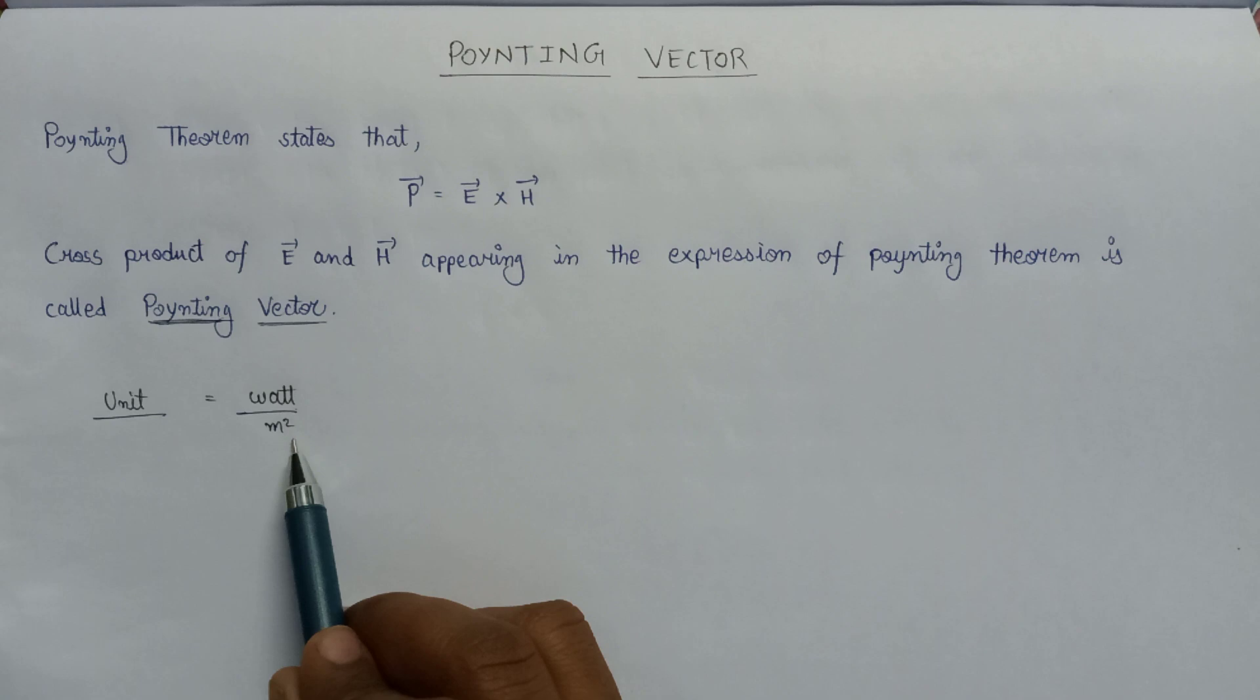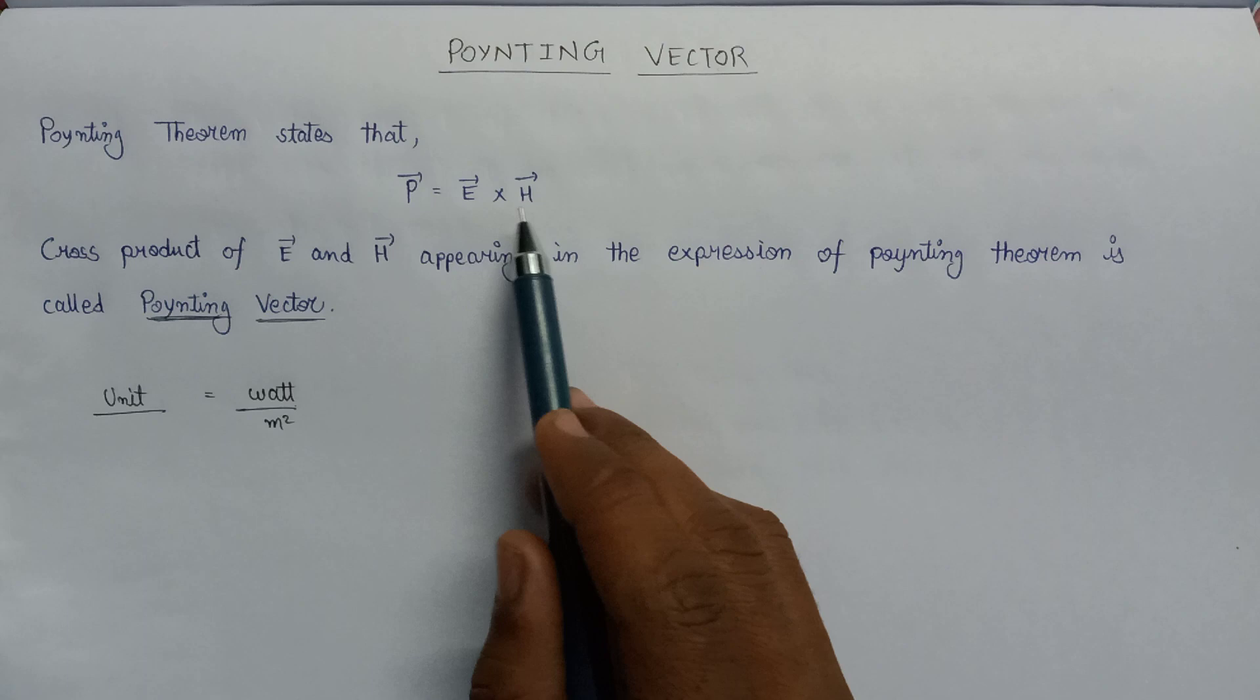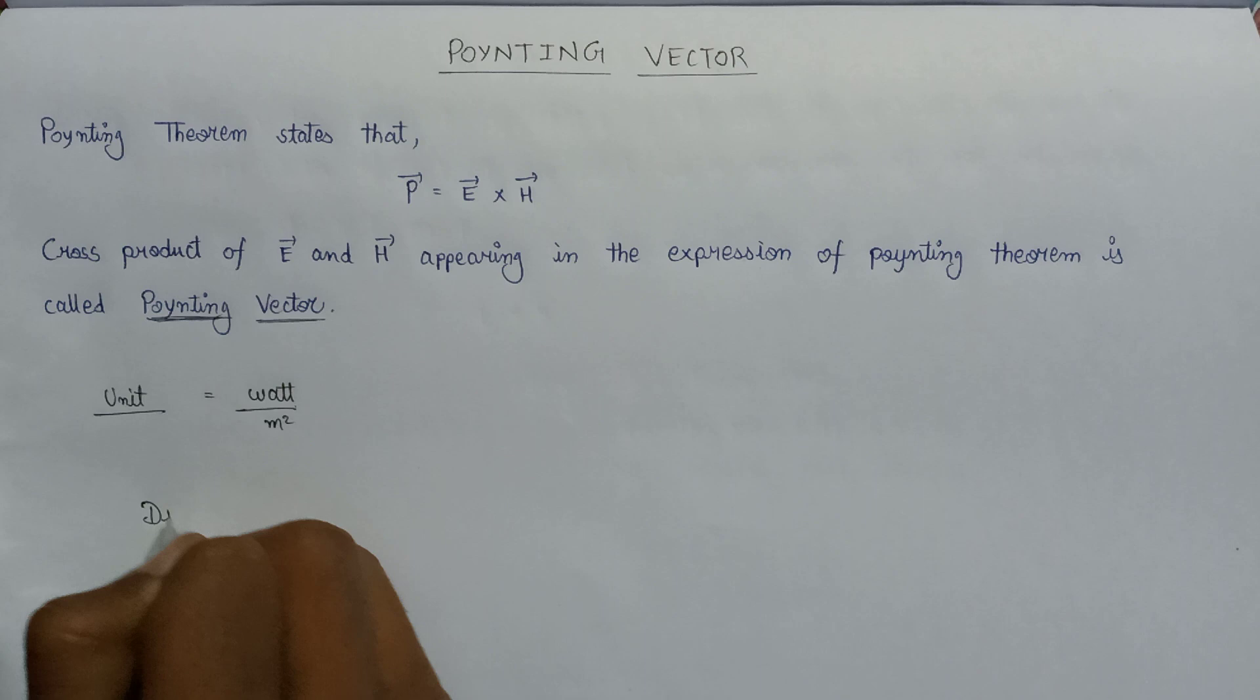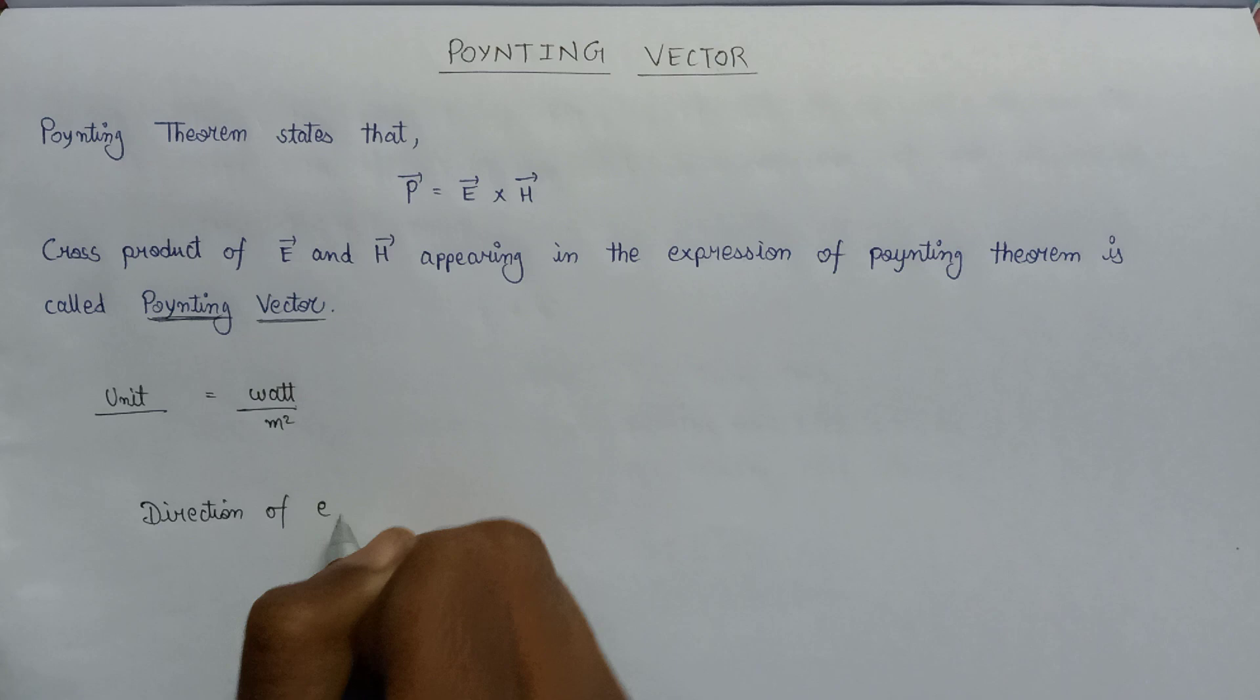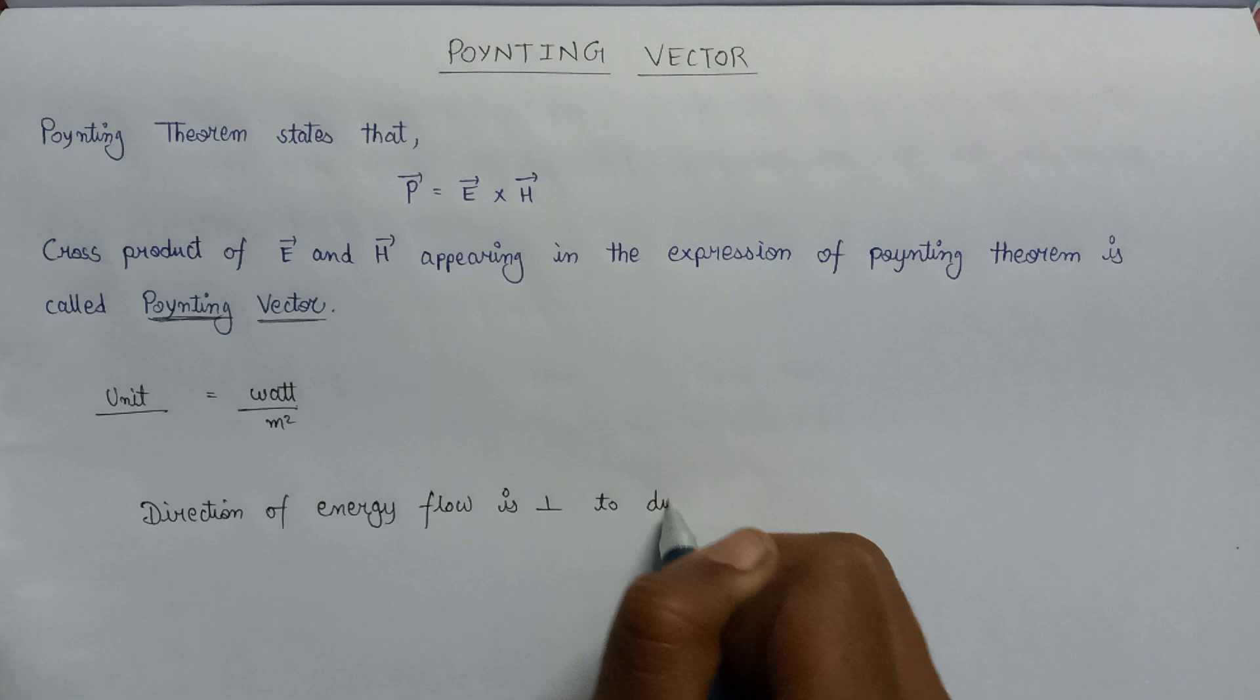That's why power per meter square is calculated as a unit for Poynting vector. The direction of the energy flow is perpendicular to both the electric field and the magnetic field intensity. So we can write it as direction of energy flow, or we can say that power flow, is always perpendicular to the direction of electric field intensity and magnetic field intensity.